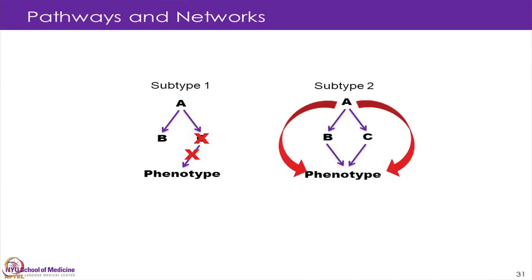But if we have another subtype where we also have a connection from B to the phenotype, that will change things. So in this case if we have a drug against C, it will stop this pathway but will still have the other pathway active. That is one thing that one can start thinking about when one has these correlation data between different genes on different levels.